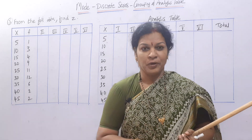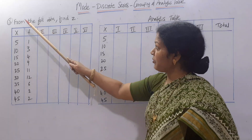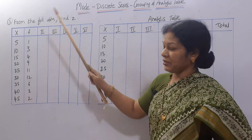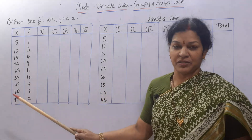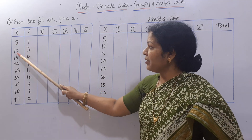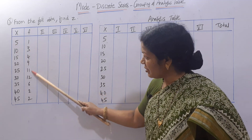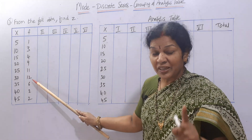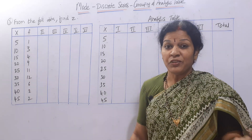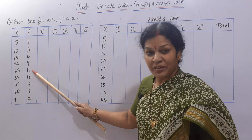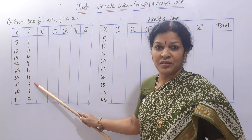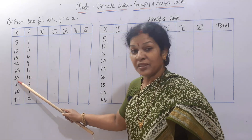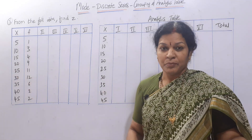Here is the problem: from the following data, find Z, that means mode. We have X and frequency. If you see, 5 repeats once, 10 repeats three times, and 30 repeats 12 times — the highest. But the next highest frequency is 11, which is almost near to 12.